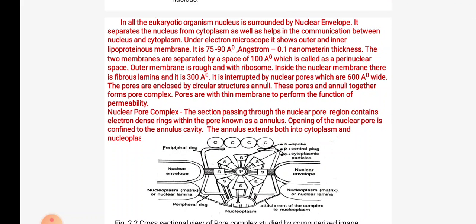We will see the detailed structure of the nuclear envelope. In all eukaryotic organisms, the nucleus is surrounded by nuclear envelope. It separates the nucleus from the cytoplasm and helps in the communication between nucleus and cytoplasm. Under electron microscope, it shows outer and inner lipoproteinaceous membrane. It is 75 to 90 angstrom and 0.1 nanometer in thickness. The two membranes are separated by a space of 100 angstrom, called as perinuclear space.